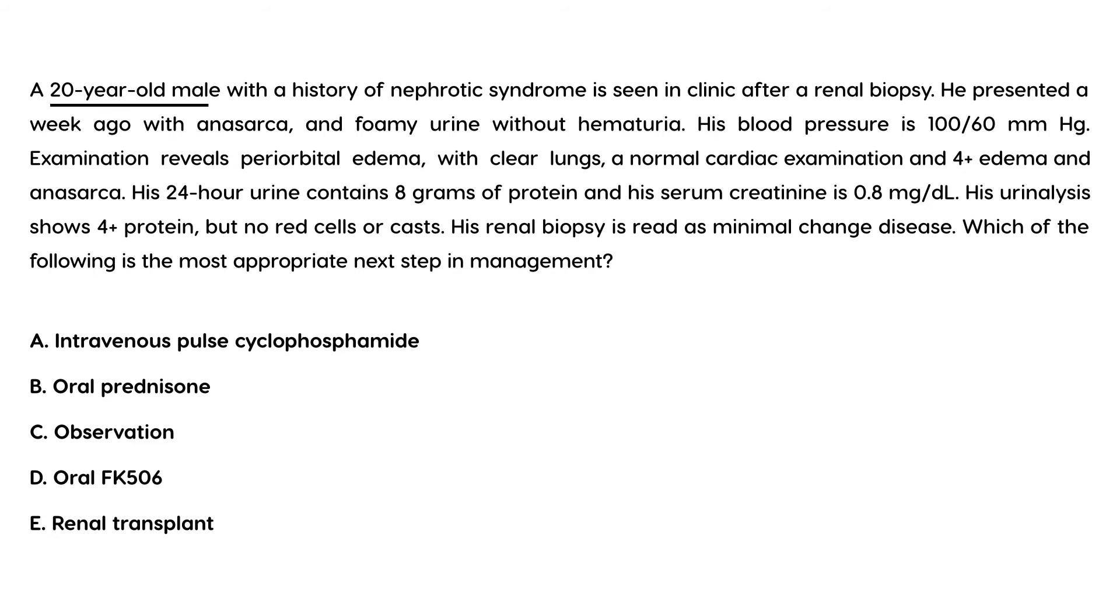A 20-year-old male with a history of nephrotic syndrome is seen in clinic after a renal biopsy. He presented a week ago with anasarca and foamy urine without hematuria. His blood pressure is 100 over 60. Examination reveals periorbital edema, clear lungs, normal cardiac exam, four plus edema and anasarca. His 24-hour urine contains 8 grams of protein and his serum creatinine is 0.8.